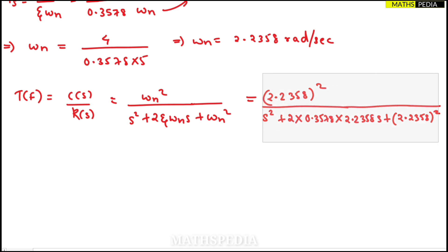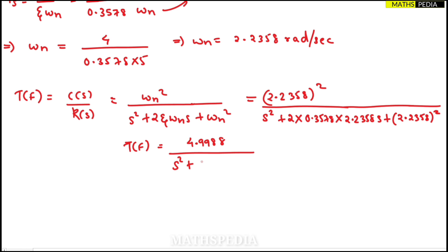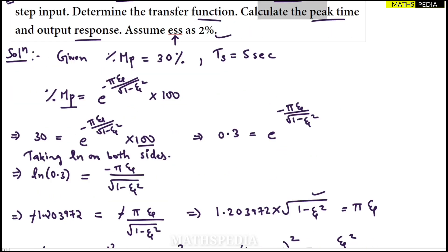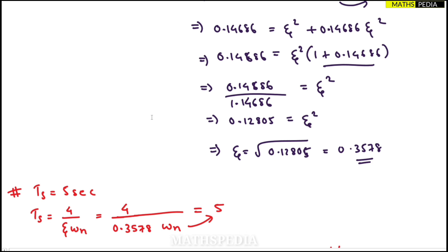After simplifying, the transfer function becomes: C(s)/R(s) = 4.9988 / (s² + 1.599s + 4.9988). This completes the first part of the question.